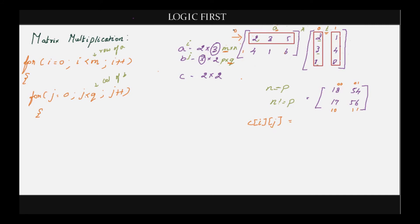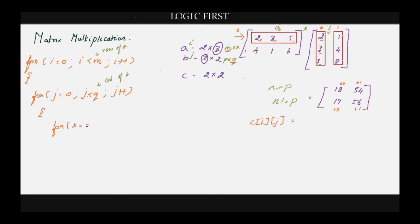You have the row number with the help of i. In order to find the column of A, you write: for k equal to 0, k less than N — we are talking about the column of A — k++.